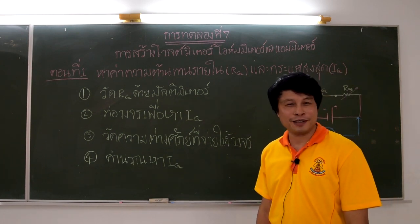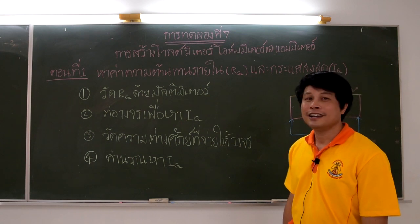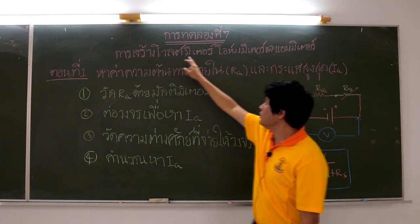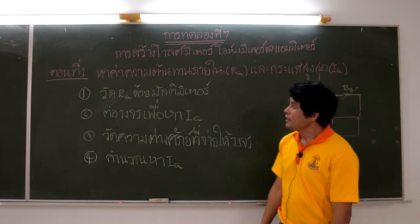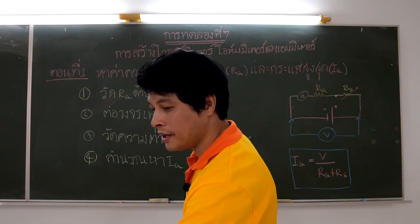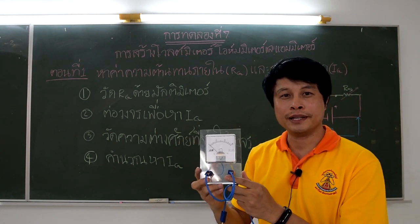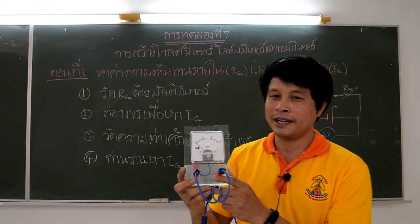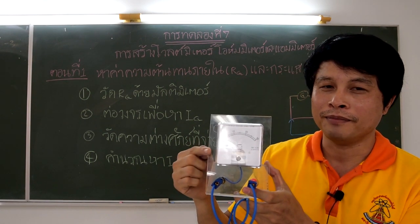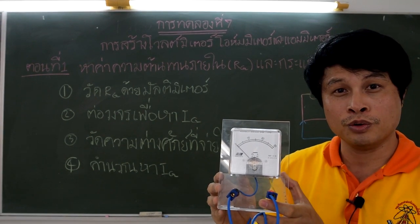Hello everyone, welcome to the physics laboratory during the social distancing period. Today we're going to learn about experiment seven: constructing an ohmmeter and ammeter. First, I'll introduce the important devices. The first important device is the galvanometer. When current passes through the galvanometer, the needle deflects. Under high current the deflection angle is large, but under small current the deflection angle is small.